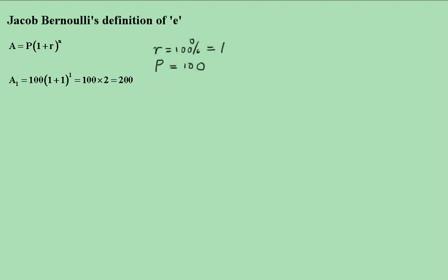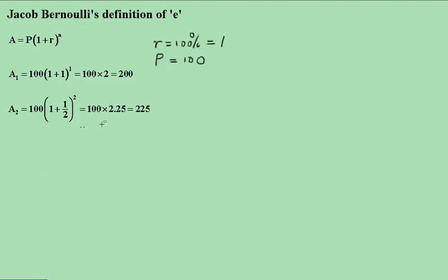Now we change that and say we're going to do this over six months. That means 100% would have to be 50%, which is a half, and therefore with those two time intervals we would have 100 times 2.25, which is $225.